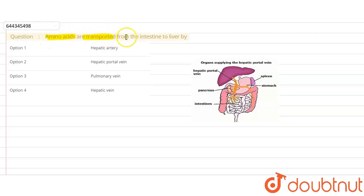The question says amino acids are transported from the intestine to the liver by which blood vessel. Here in the options we are given different arteries and veins, and we have to determine the correct one. For that we need to see the function of all the blood vessels mentioned here.